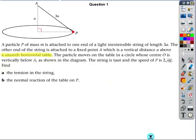The particle moves on the table in a circle, whose centre O is vertically below A, as shown in the diagram. The string is taut, and the speed of P is 2 square root ag. And we've got to find the tension in the string and the normal reaction of the table on P.